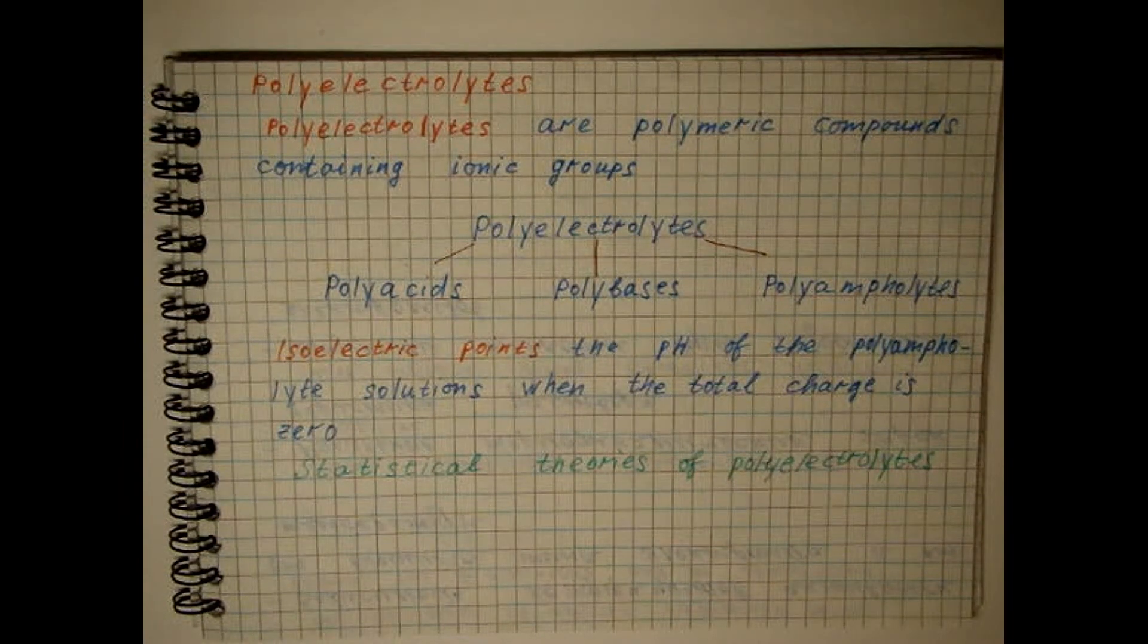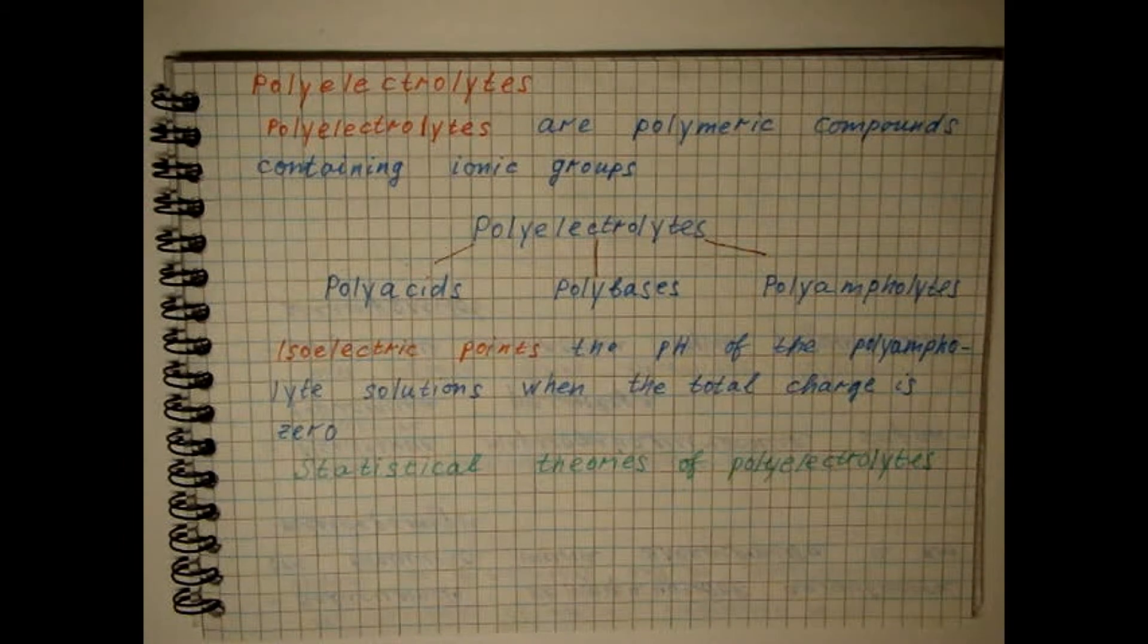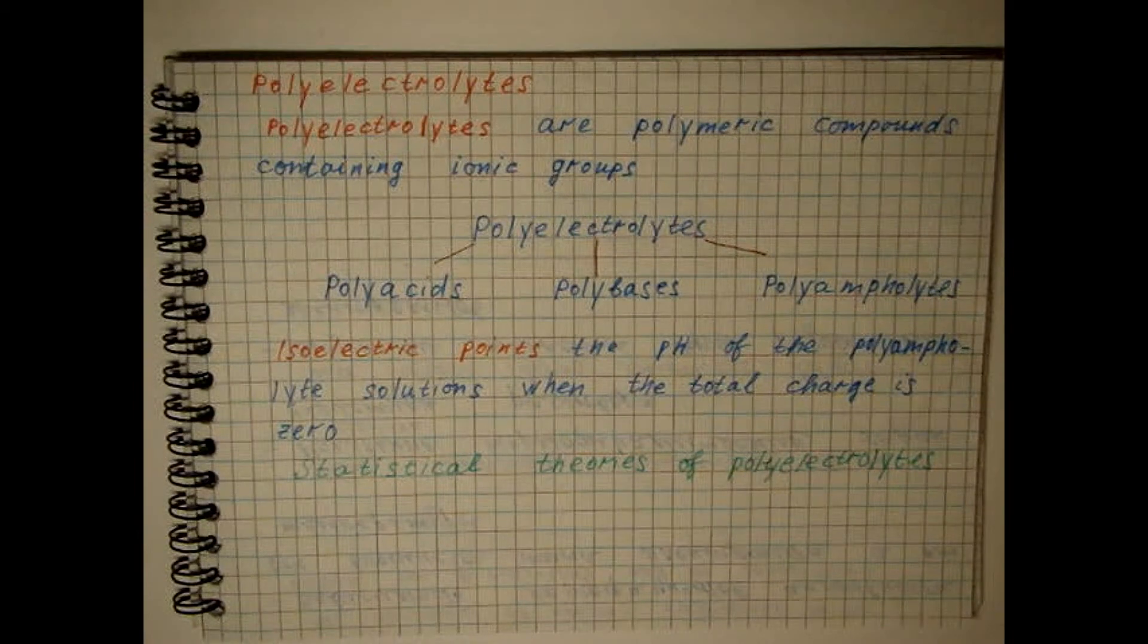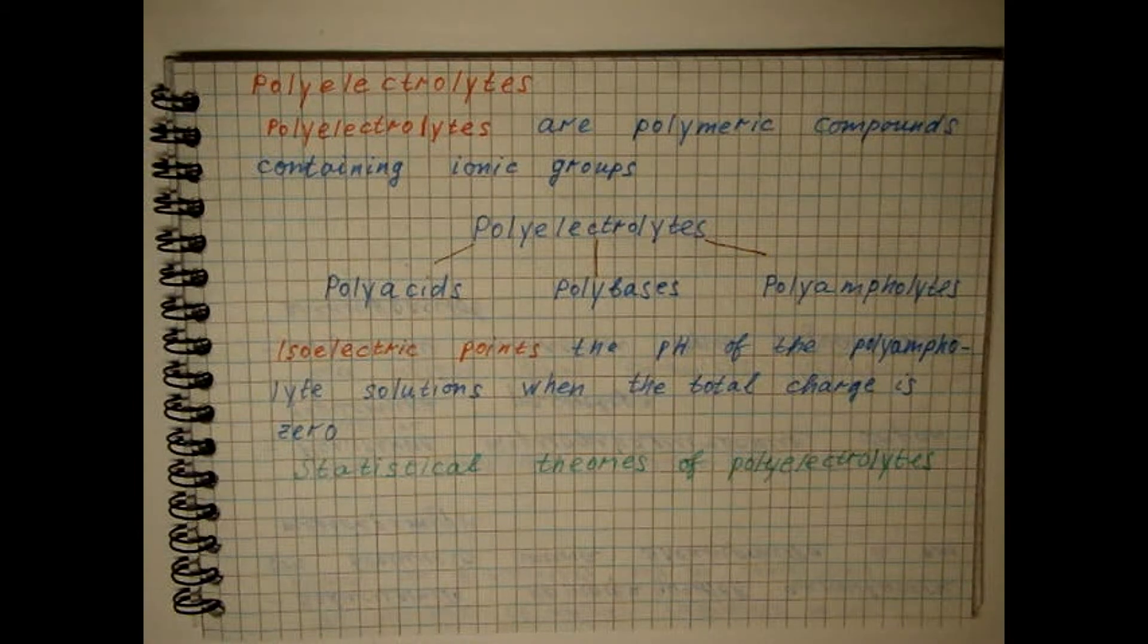Theories are proposed that are based on a model of a randomly rolled chain with discrete equidistant charges deposited on it.